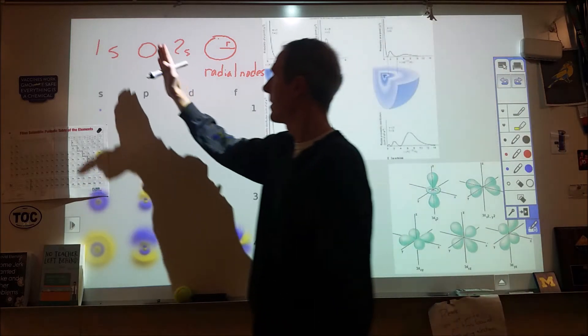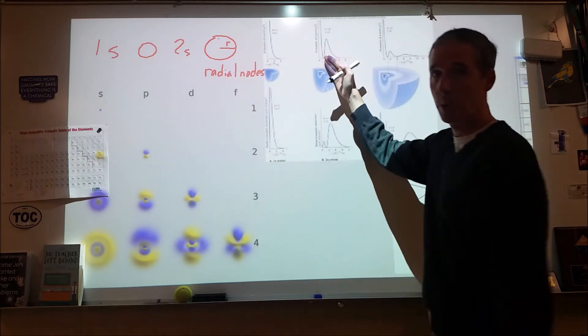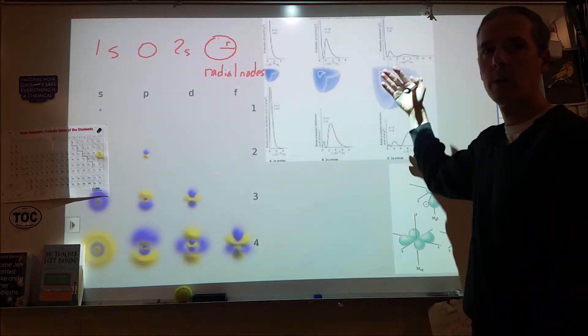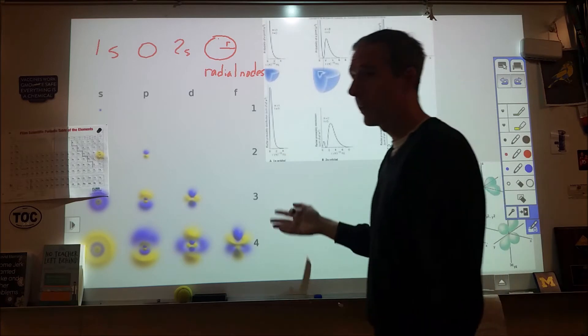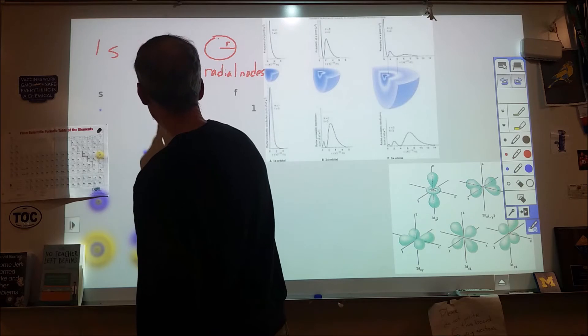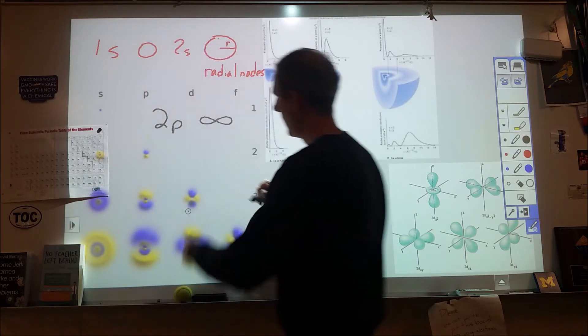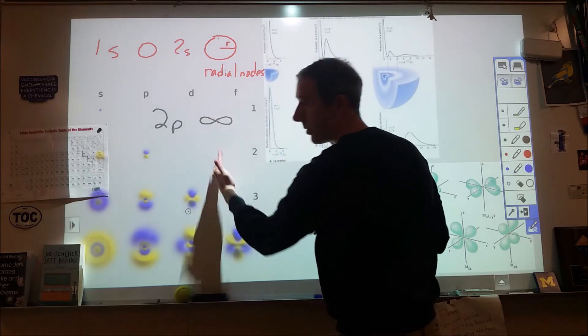Now 1s doesn't have any radial nodes. 2s has one of them. 3s has two of them. 4s has three of them, and so on and so forth. What's the other type of node? Well the other type of node you're familiar with because you've seen what a p orbital looks like. So for a 2p orbital, we'll draw something like this, and here, this is a nodal plane.